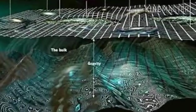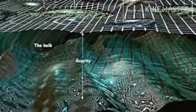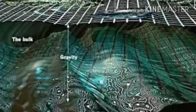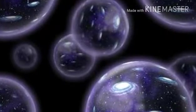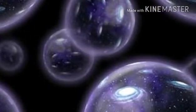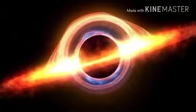For decades, physicists thought that black holes and their mysterious internal singularities could exist in harmony with Einstein's general relativity due to something called the cosmic censorship conjecture.